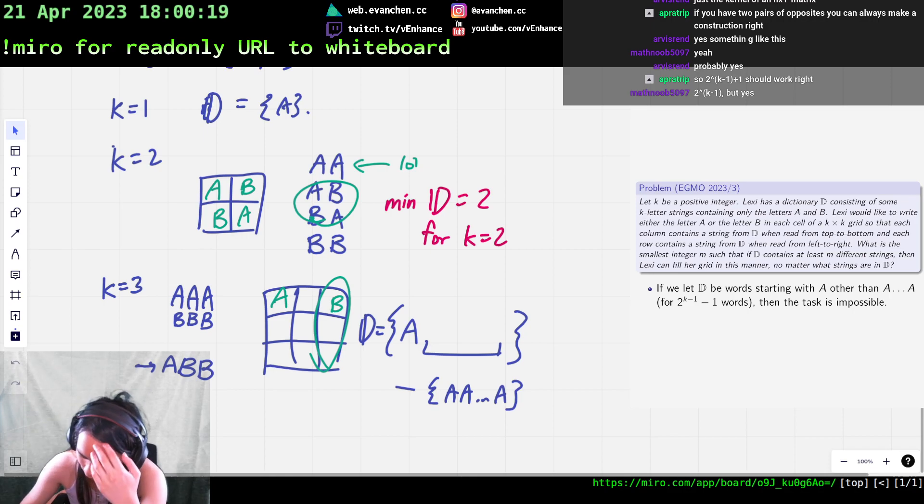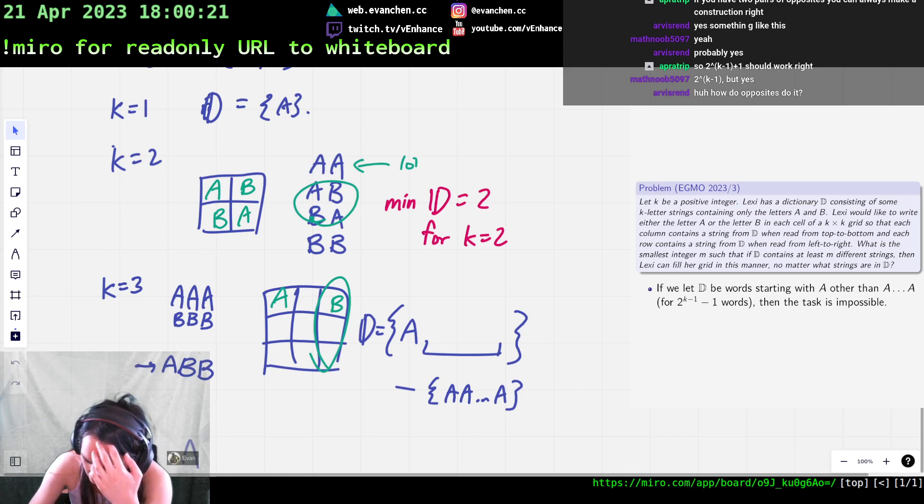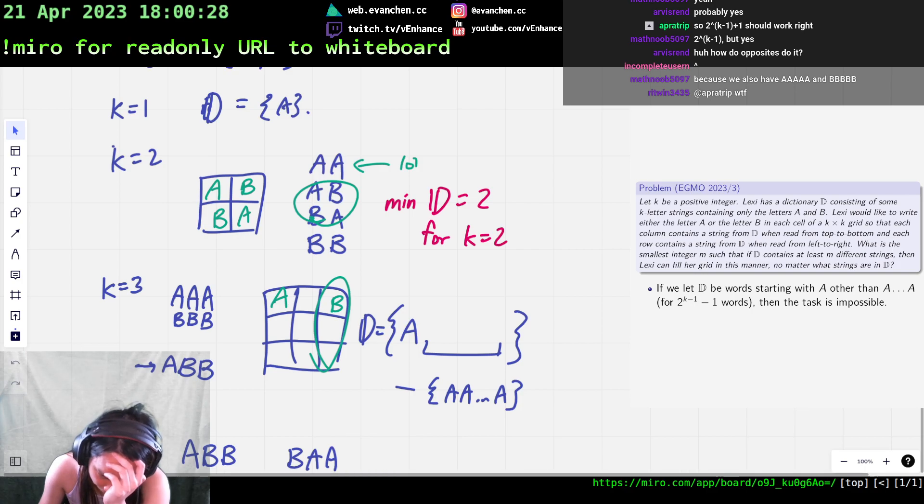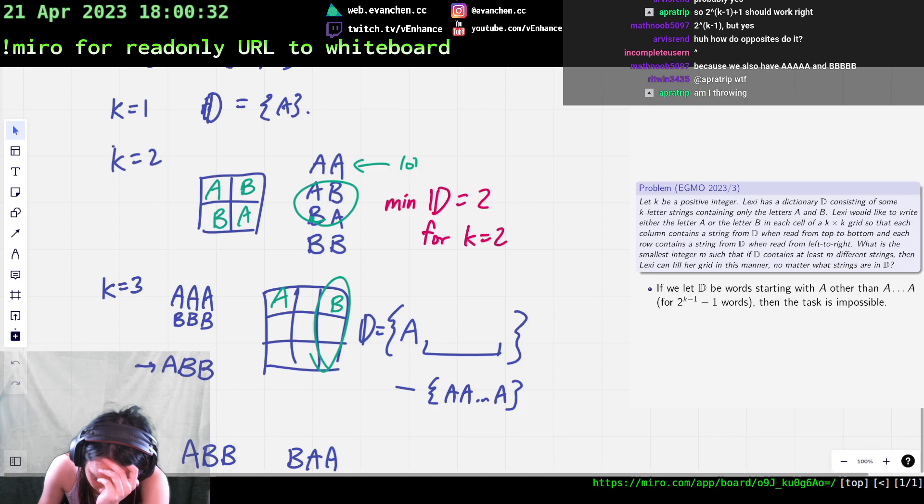Oh, opposites is just good enough? Wait, okay. Opposites means that you—if I have both AAB and BAA—oh, come on. Okay, yeah. Yes, opposites is fine. Yeah, opposites will just work.